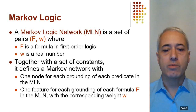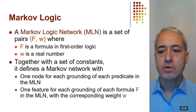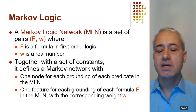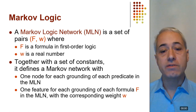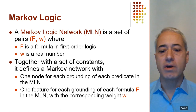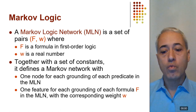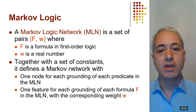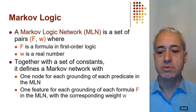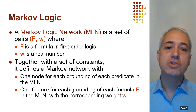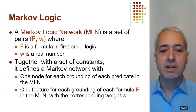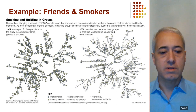A Markov logic network, or MLN for short, is a set of pairs (F, W), where F is a formula in first-order logic with standard syntax and semantics, and W is a real number. Together with a set of constants representing objects in the world, an MLN defines a Markov network — an undirected graphical model representing a probability distribution — with one node for each grounding of each predicate, and one feature for each grounding of each formula with a corresponding weight.